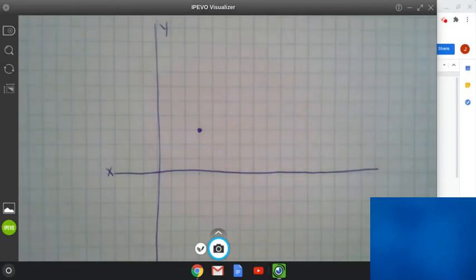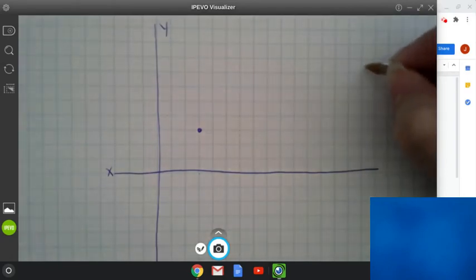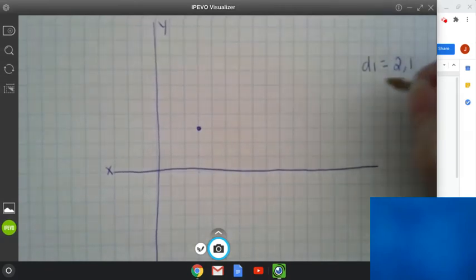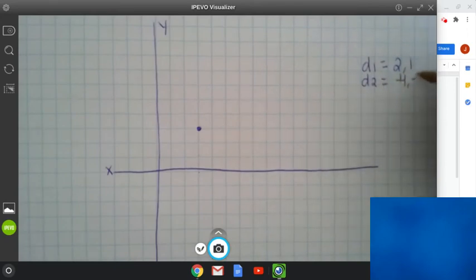So this is my initial position for the dog. Now, I had three displacements. I'm going to write them off to the side. D1 was 2-1, D2 was negative 4, negative 2, D3 is 3, negative 2.